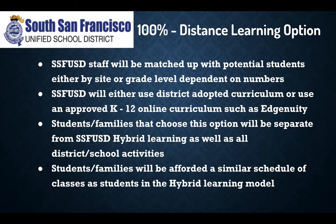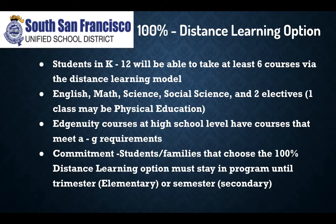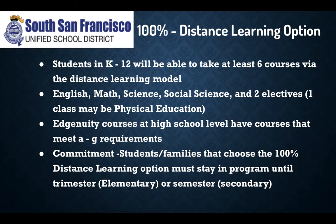Students and families in this 100% distance learning option will have access to a similar schedule as students in the hybrid learning model. Students will take at least six courses: English, math, science, social science, and two electives — one of which may be physical education. The key commitment we're asking of families choosing this option is to stay in this program until the trimester ends at the elementary level — that's 12 weeks — or the semester at the secondary level, which is 18 weeks, as that's a great point to transition back to the hybrid learning model.